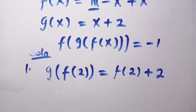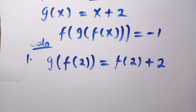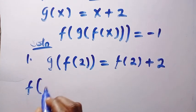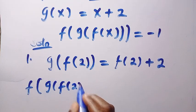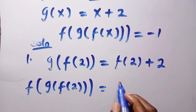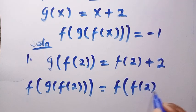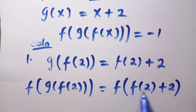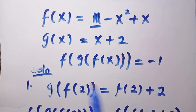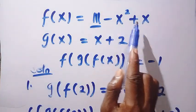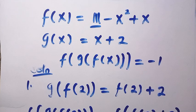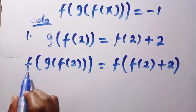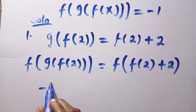And again, let's record from this as well. If I introduce another function f, which is what we have here — f(g(f(2))) will equal f(f(2) + 2). And this f(g(f(2))) is given as -1.